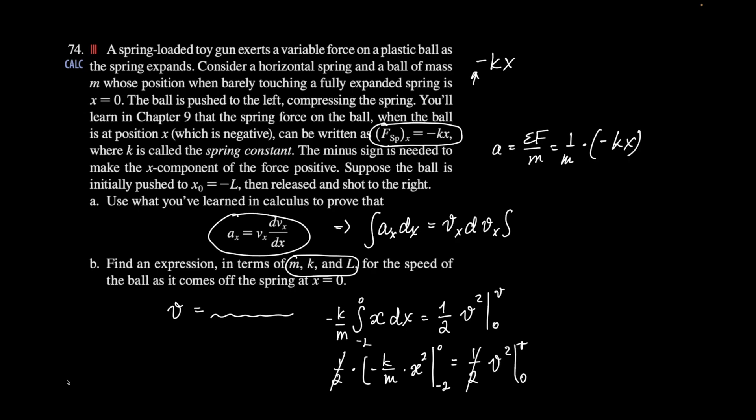1 half cancels. When I go for the top, I end up with 0 for x, because x equals 0, the whole thing equals 0. 0 minus negative k over m, l squared.